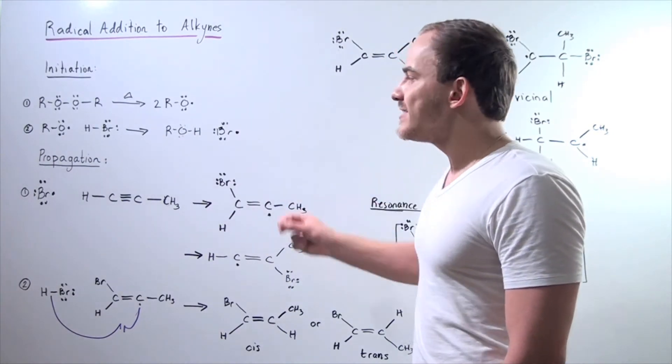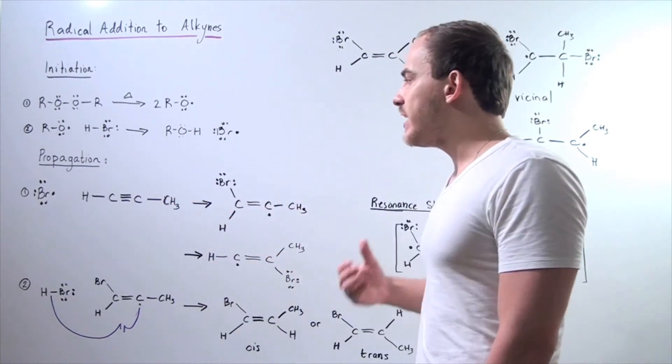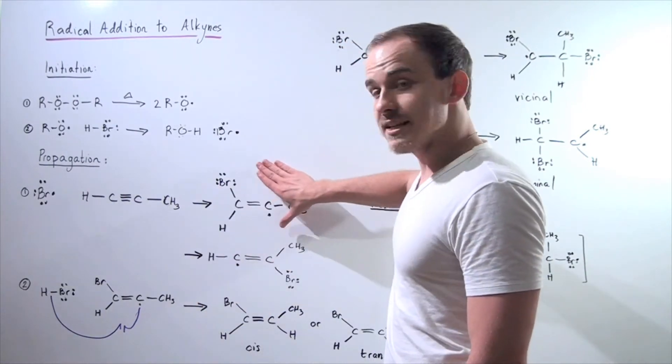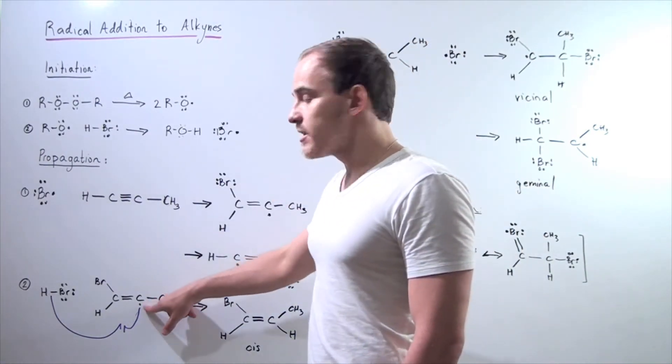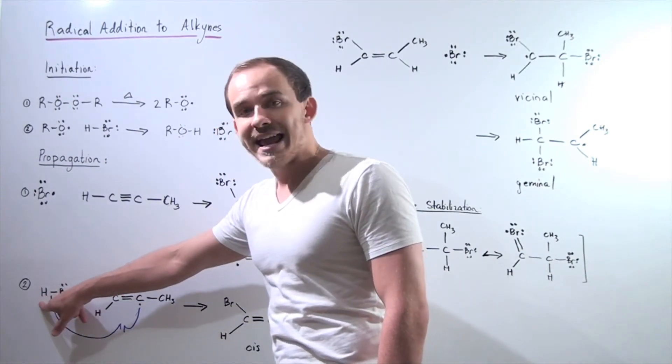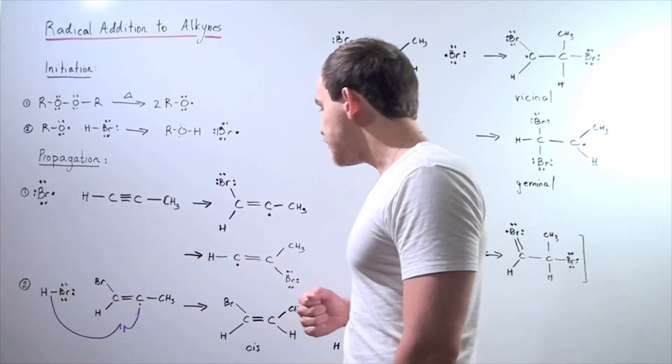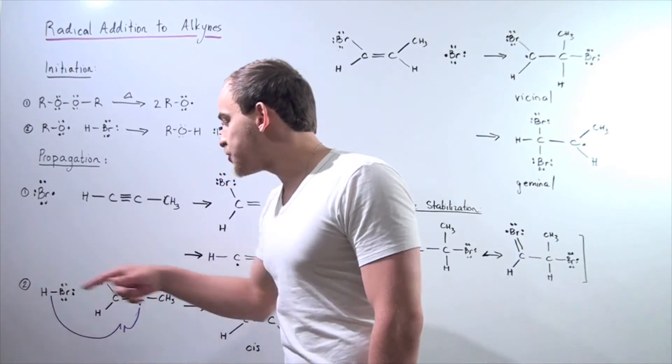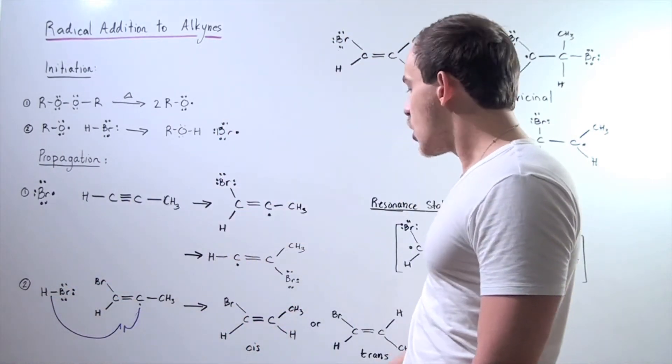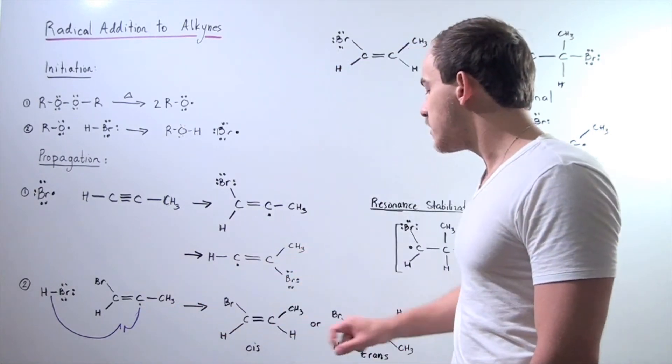So now in the second propagation step, we have another HBr molecule interacting with this intermediate. This electron interacts with one of the electrons next to the H, abstracting that H. And so now this H can either go onto this side forming the trans or onto this side forming the cis. So now we have cis-trans isomers form.